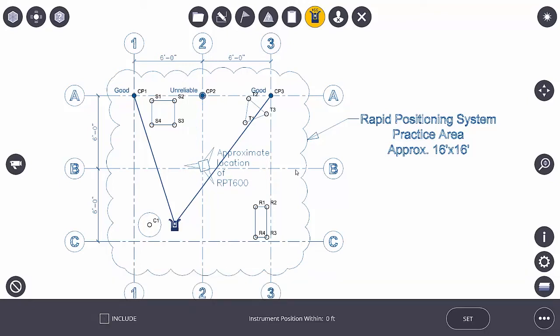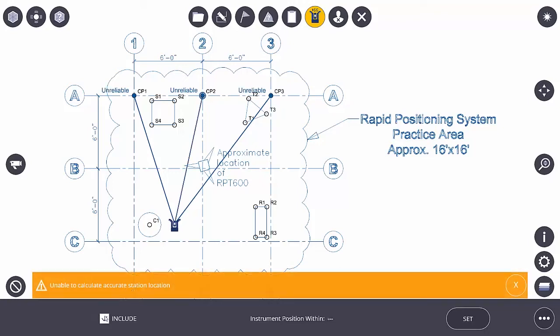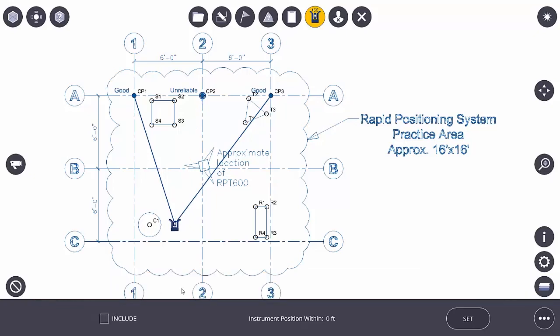And if I do that you'll notice that my orange piece of toast goes away. If I keep it in it says unable to calculate accurate station location. But if I get rid of that middle point it says all of a sudden now my instrument position is within zero feet. It's right on the money. And that's what I want to see.